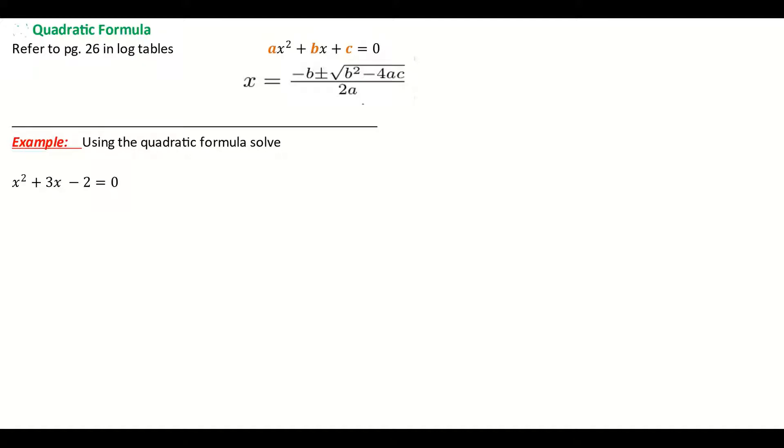We just need to be aware of what the letters are standing for here. Our quadratic equation first of all is something that has an x squared. It has the highest power of 2. It will then have an x to the power of 1, and then it will have a number on its own known as the constant. So it has to have an x squared, an x, and a constant.